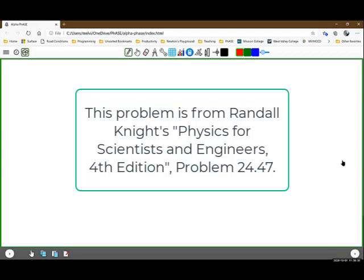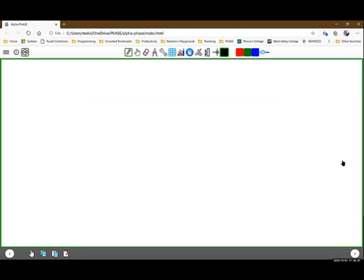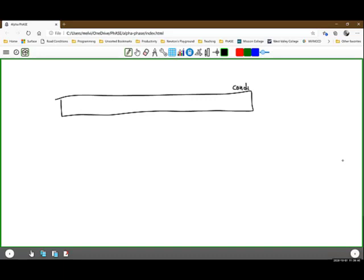So let's go ahead and start with an image. So we have a very big slab, a conducting slab. This is our conductor. Now I'm going to assume that this conductor is neutrally charged. What this means is it has an equal number of positive and negative charges.